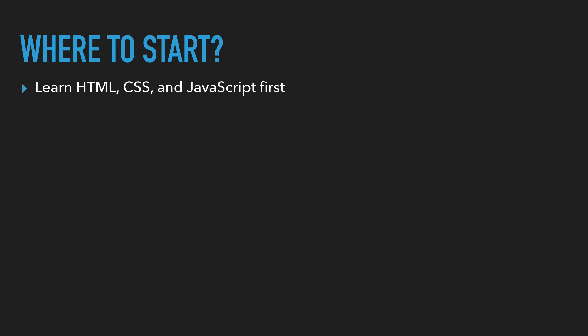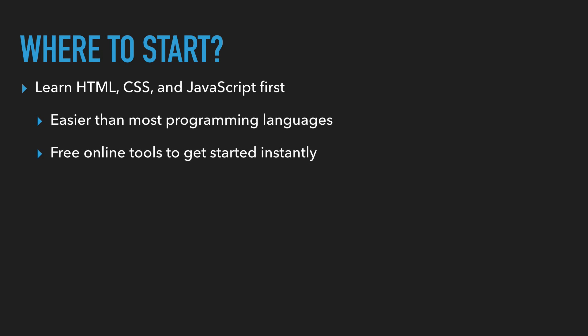So where to start? I believe that you should learn HTML, CSS, and JavaScript first. Why? Number one, these are easier than most programming languages to learn. Another great benefit is there are a number of free online tools that allow you to get started programming instantly. You can start writing on a page and see text appear, then write some CSS and instantly see things change. It's pretty exciting to get a quick start, whereas other programming languages may need a lot more setup.